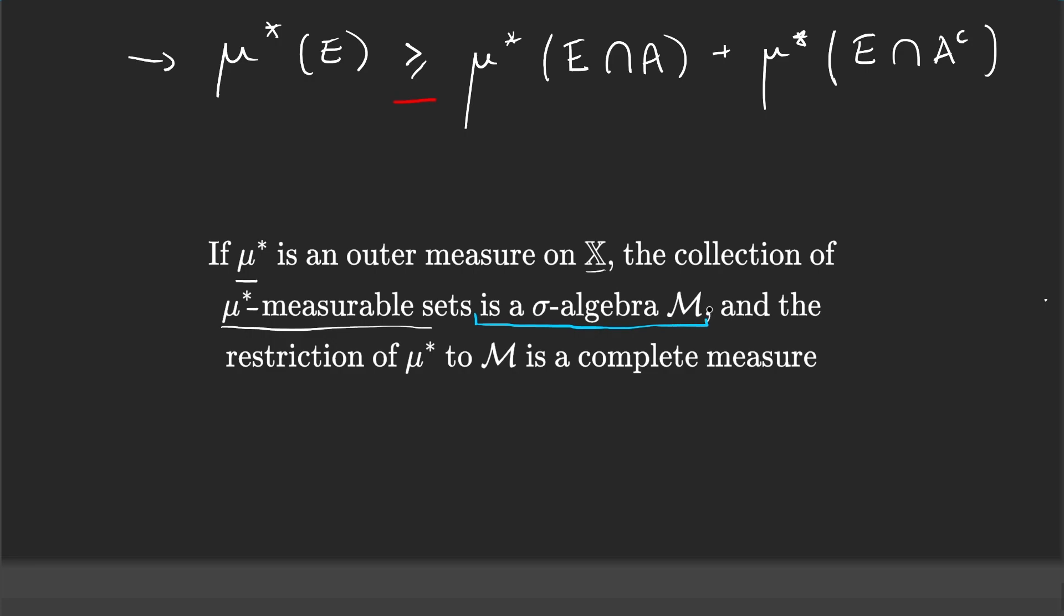And this is amazing because if we go back to the first videos we can see how complicated σ-algebras were. We were asking for a set so many properties. Well, it turns out that whenever you have an outer measure, the μ* measurable sets form a σ-algebra, and that's just amazing.